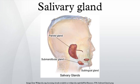Salivary glands are innervated either directly or indirectly by the parasympathetic and sympathetic arms of the autonomic nervous system. Both result in increased amylase output and volume flow. Parasympathetic innervation to the salivary glands is carried via cranial nerves. The parotid gland receives its parasympathetic input from the glossopharyngeal nerve via the otic ganglion, while the submandibular and sublingual glands receive their parasympathetic input from the facial nerve via the submandibular ganglion.